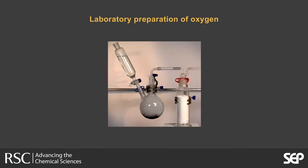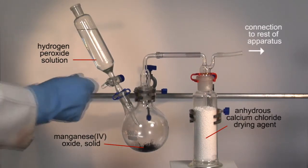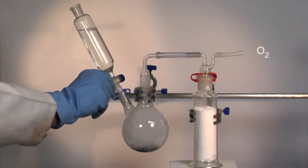Oxygen can be produced by the decomposition of hydrogen peroxide. The compound slowly decomposes into water and oxygen, but the reaction is greatly accelerated by the addition of a catalyst.